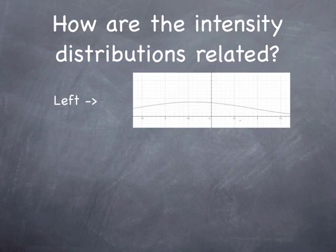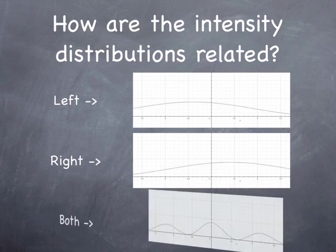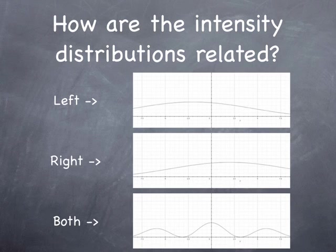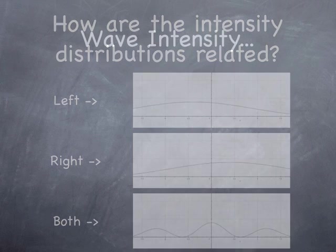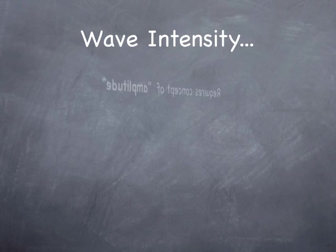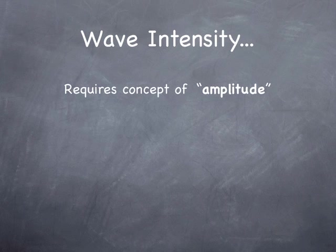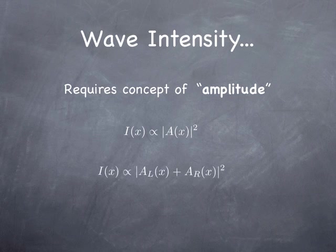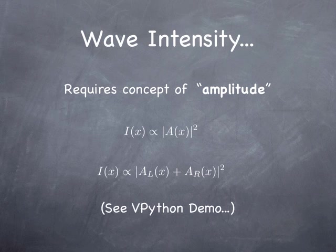How are those related? There's the left distribution, there's the right distribution, and there's both. Think about that a second. To understand the distribution intensity for waves, you need to know the idea of an amplitude. The intensity is proportional to the square of the amplitude, but the total amplitude is the sum of the amplitude from the left and the amplitude from the right. We get the idea of interference.